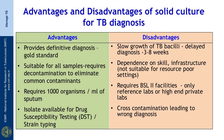We will now look at the advantages and disadvantages of solid culture for TB diagnosis. The advantages include that the culture provides definitive diagnosis and serves as the gold standard. It is suitable for all samples, but requires decontamination to eliminate common contaminants. It requires about 1000 organisms per ml of sputum, and the isolate is available for drug susceptibility testing and also for strain typing.